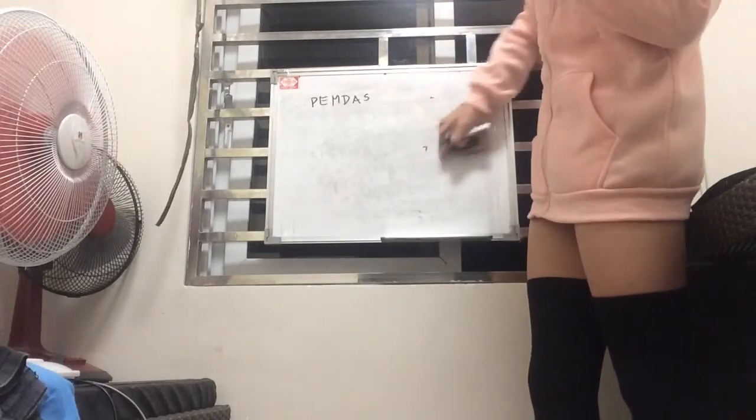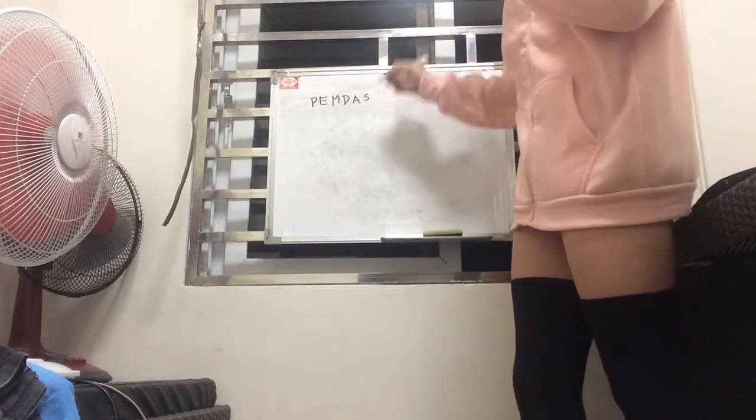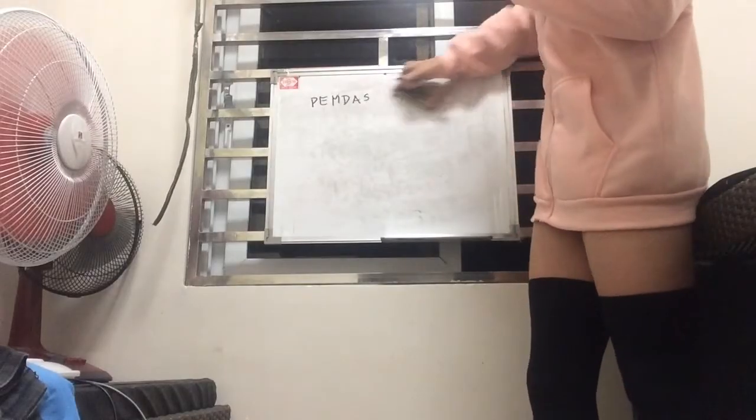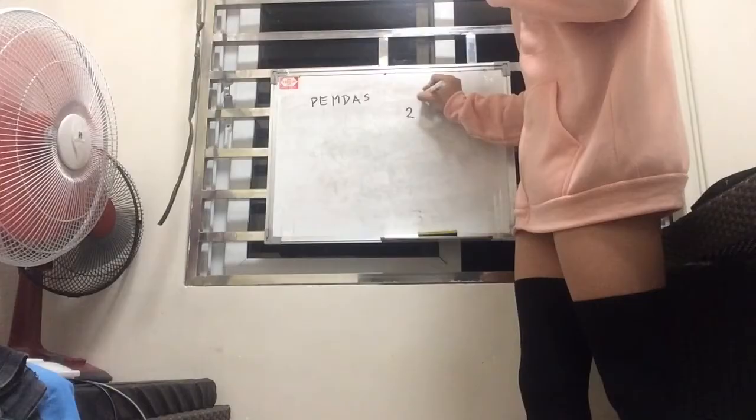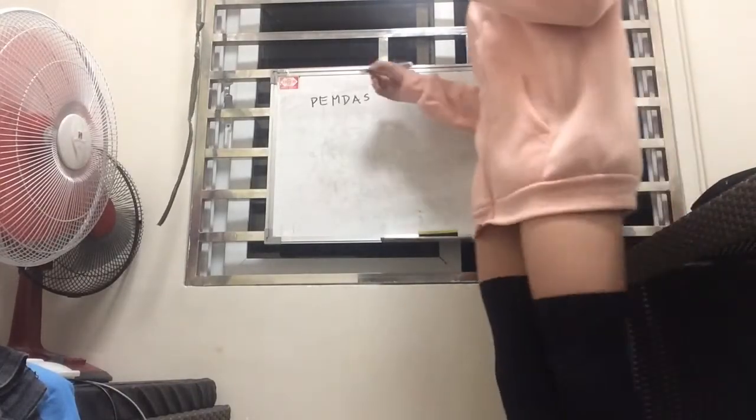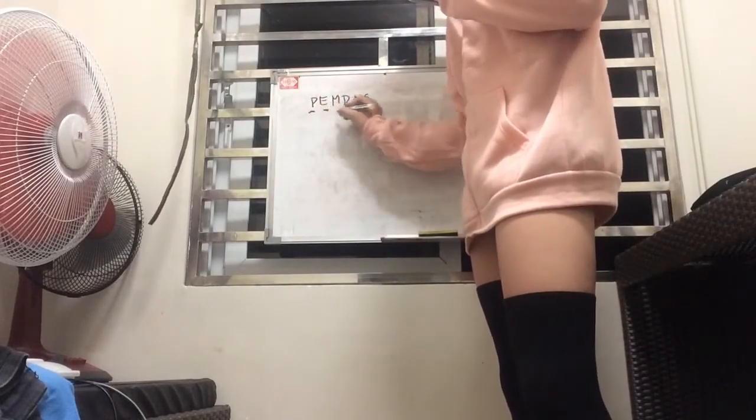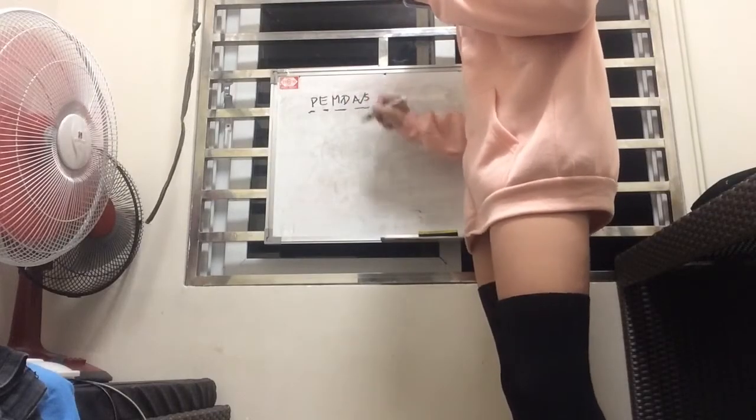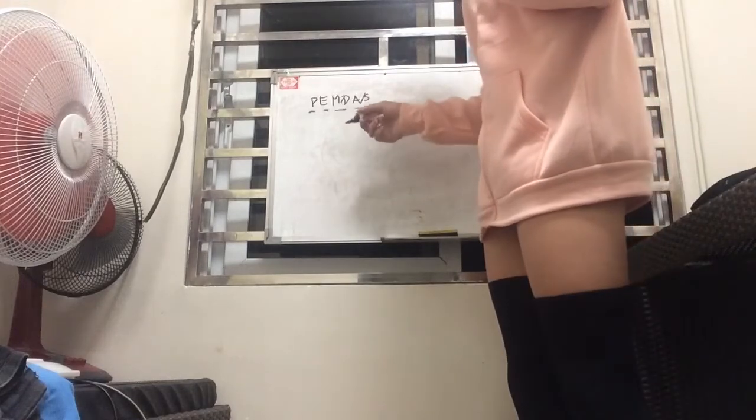So what if we're given something that's written within a bunch of parentheses, or something like this? Or what if we're given something that's raised to an exponent, like 2 to the 3rd? So we perform those first, because as we see here, the P and the E comes before M slash D and A slash S.